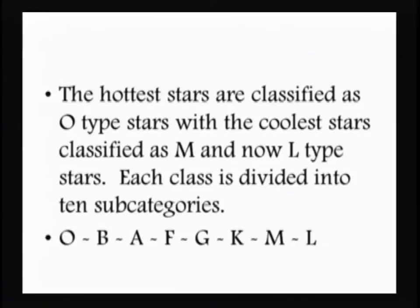The hottest stars are classified as O-type stars, and the coolest stars are classified as M-type stars. We also now have some additional divisions, like L-type stars. Each class is divided into 10 subcategories. So the classification sequence goes: O, B, A, F, G, K, M — and sometimes L.